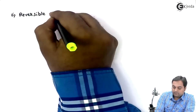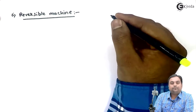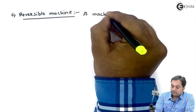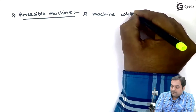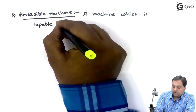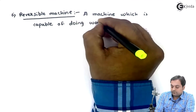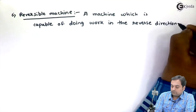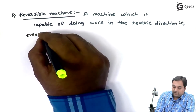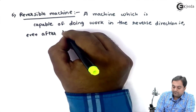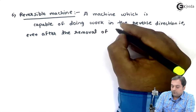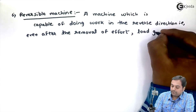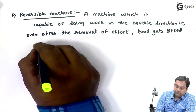The first one is reversible machine. The definition of reversible machine is: a machine which is capable of doing work in the reverse direction — that is, even after the removal of effort, load gets lifted — is called a reversible machine.